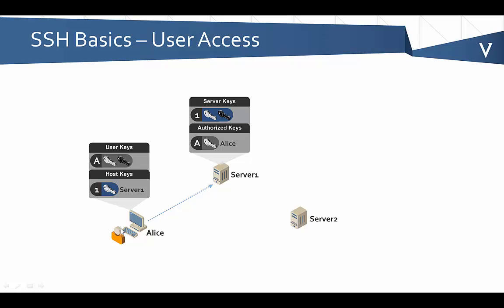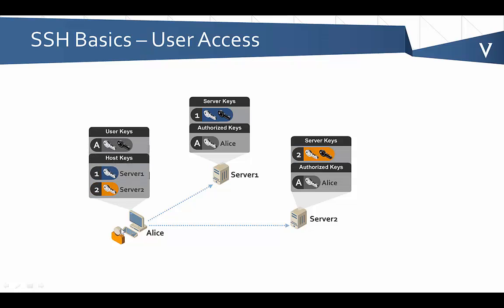If Alice logs into multiple servers, she can place that same public key into the authorized_keys file on Server 2 as well, and now she can authenticate to Server 2. Server 2 has its own server key pair, so Alice would have been prompted the first time she connected to Server 2 for its public key, and now she's trusting that.